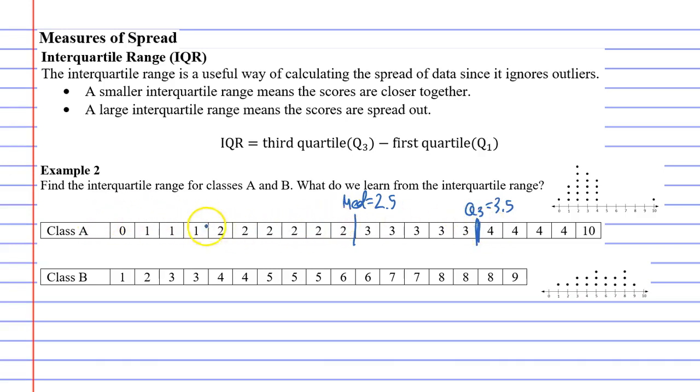And then we find the middle of the bottom half, two, three, which belongs here. Notice that we've got five numbers on each side. And this is called quartile 1, or the first quartile.